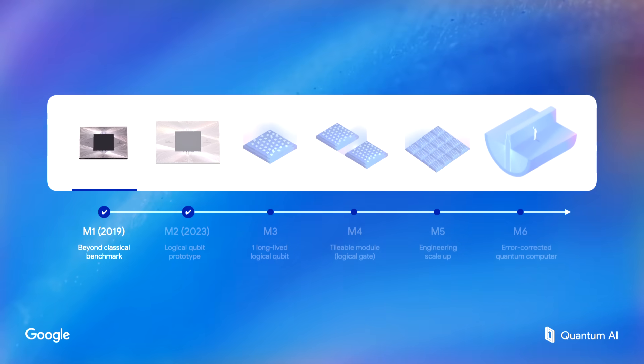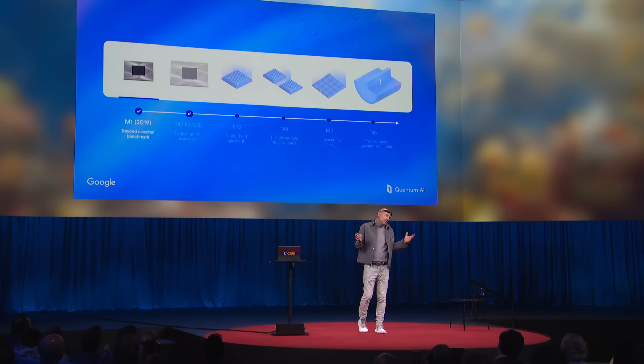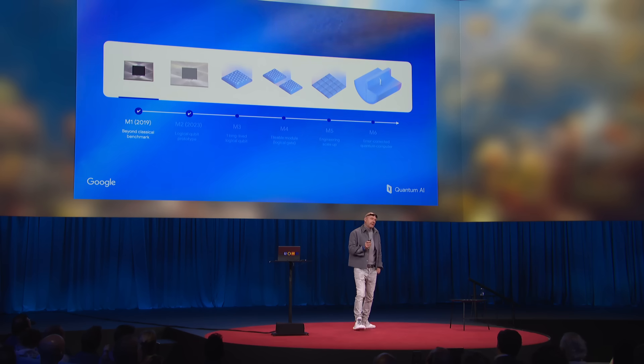To unlock more applications, we will need to build a large error-corrected quantum computer. Here you see our roadmap to build a computer with a million physical qubits. It consists of six milestones and we have already achieved the first two. Prior to 2019, nobody had shown a beyond-classical computation on a quantum computer — we were the first to demonstrate it. Our chip could perform a computation that the then-fastest supercomputer would have needed 10,000 years to do. But recently we repeated this experiment, and now Frontier, today's top supercomputer, would need one billion years to perform this computation. This dramatic growth in compute power corroborates Nevin's law, which says that the power of quantum computers will grow at a double exponential rate.